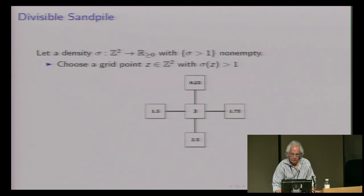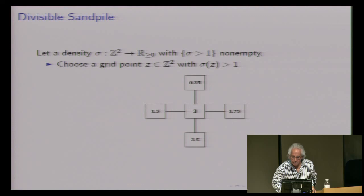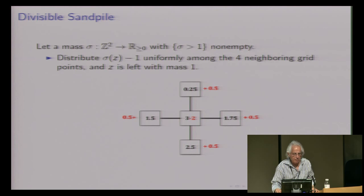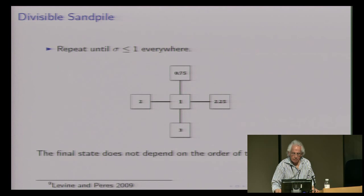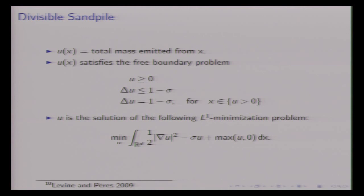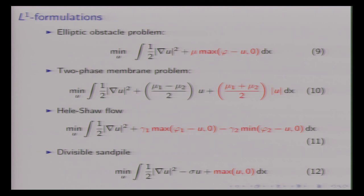The divisible sand pile: this is Bak-Tang-Wiesenfeld stuff, about which I know very little, but it turns out this is applicable there too. You have a grid point and a density sigma. Sigma > 1: choose a grid point with sigma > 1, look at the neighbors, and distribute sigma − 1 among the four neighboring grid points. Repeat until sigma ≤ 1 everywhere. The final state doesn't depend on the order in which you do this, and by God, you can solve it as an L1 minimization problem. Minimize grad u squared minus sigma u plus max(u, 0).